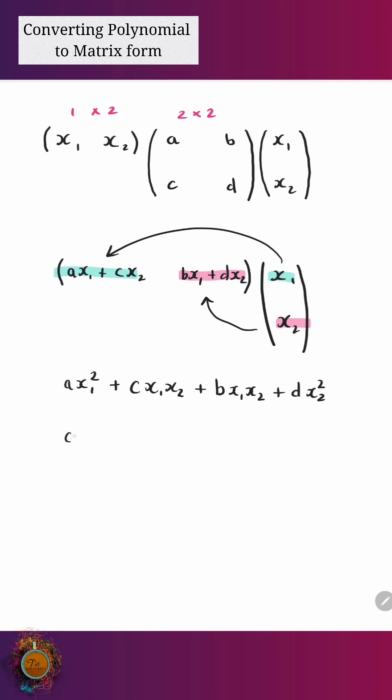So it's interesting. This becomes ax1 squared, plus you've got this many of x1x2 plus this amount of x1x2. In essence we can do, let's do it in order, b plus c, x1x2, plus d lots of x2 squared.